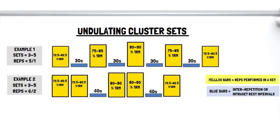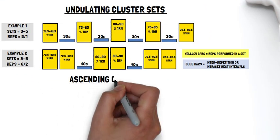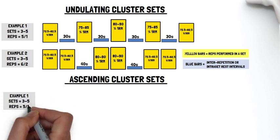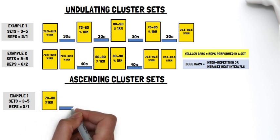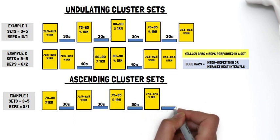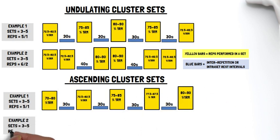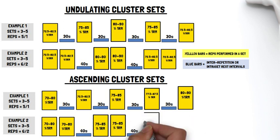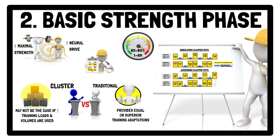Whereas ascending cluster sets during a basic strength phase include performing 3–5 sets using 5 repetitions with a 30-second inter-repetition rest interval while increasing the load after each rep, or using 6 repetitions with a 40-second intra-set rest interval placed between every 2 reps before increasing the load. These advanced set configurations may induce a potentiation effect that can increase movement velocity within and between sets, and this potentiation effect is most likely reserved for stronger individuals.